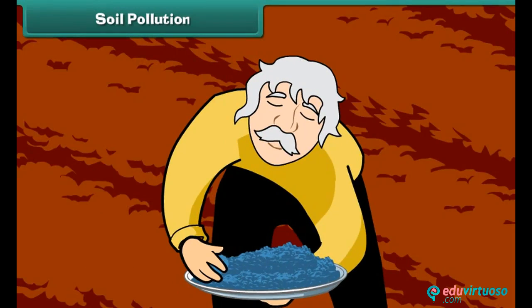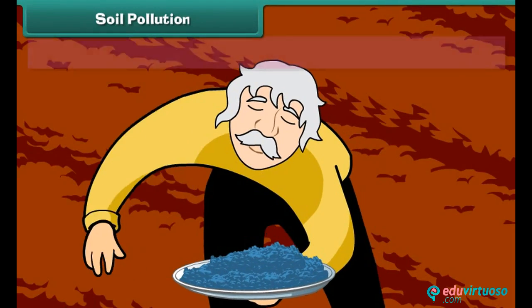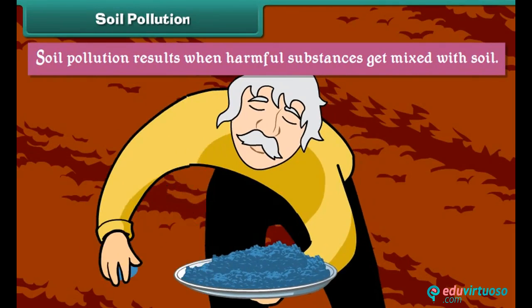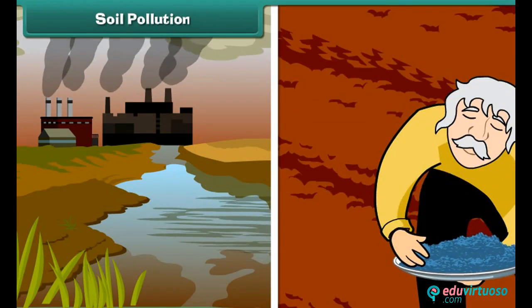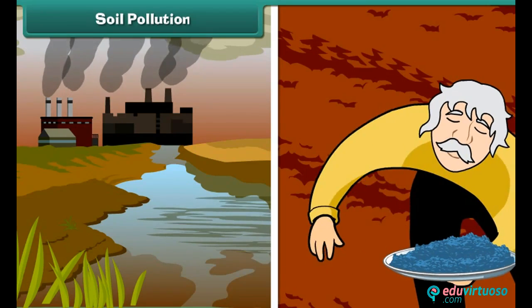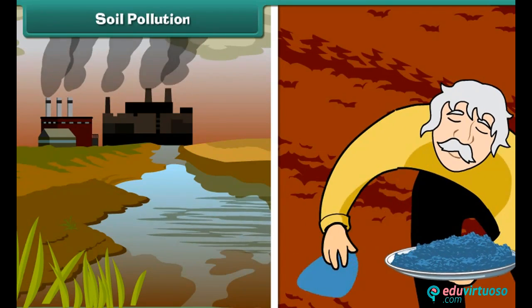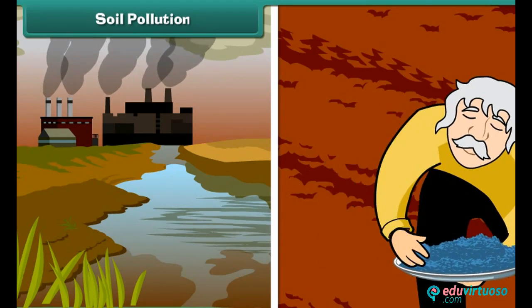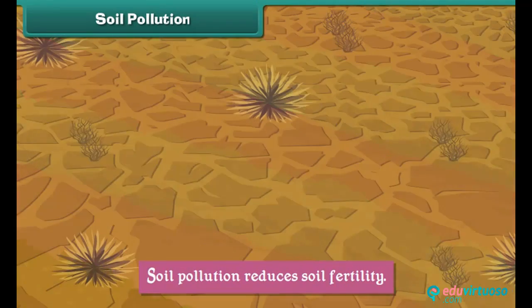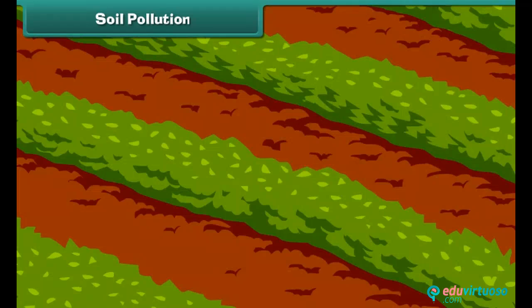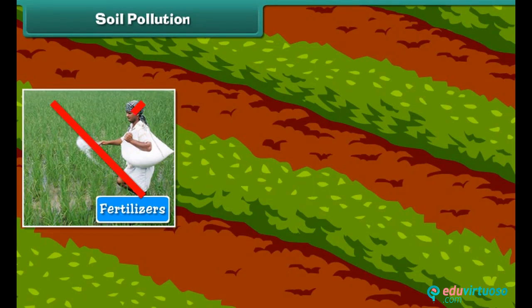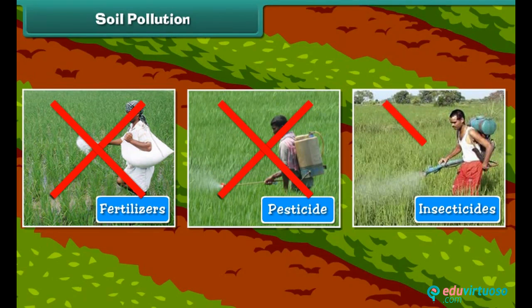Soil pollution. Soil pollution results when harmful substances get mixed with soil. Industrial waste, fertilizers, pesticides, and insecticides pollute soil. Soil pollution reduces soil fertility. We can prevent soil pollution by reducing the usage of fertilizers, pesticides, and insecticides.